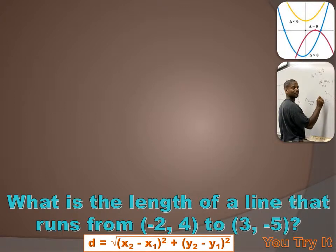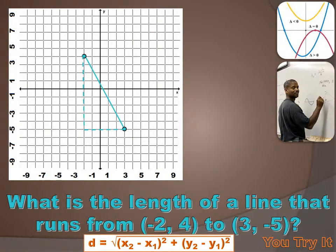What is the length of a line that runs from (-2, 4) to (3, -5)? There are a couple of ways we can figure this out. We can plug these values into the equation and solve, or we can reconstruct it — you don't really have to draw the line, but it might be helpful. Figure out the length of the horizontal and vertical components, and then use the Pythagorean theorem.